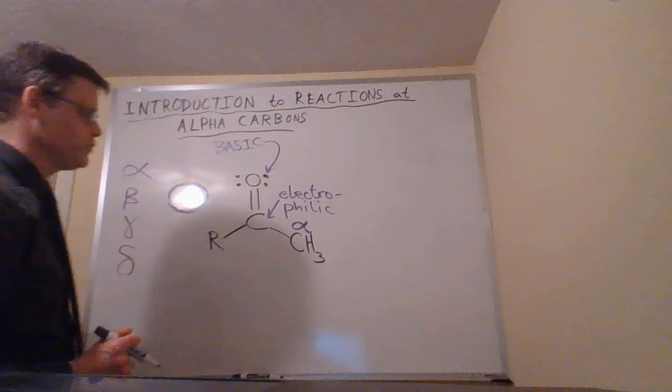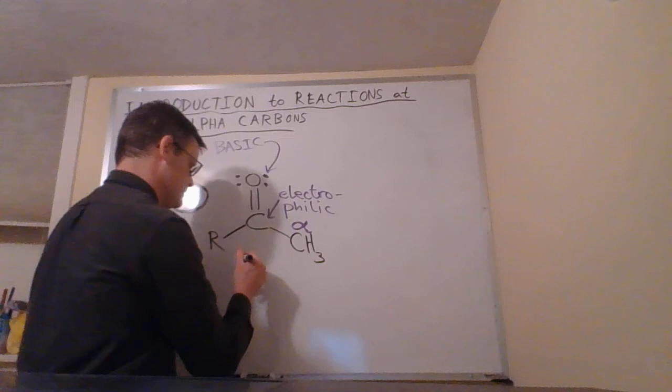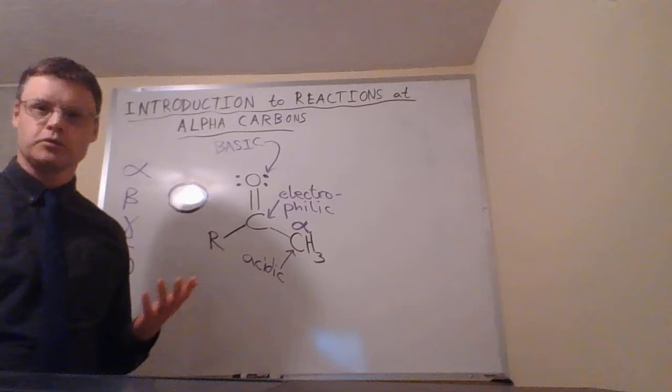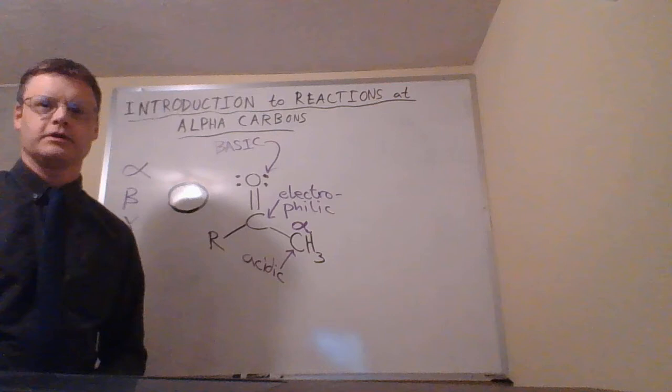What's important for us to know in terms of reactivity is that the alpha carbon is slightly acidic. It's going to act as a Lewis acid. It's not very acidic—it has a pKa of maybe 20 to 25 depending on what our R group is here—but that's enough to do some important chemistry, and so we're going to look at that chemistry in this chapter.